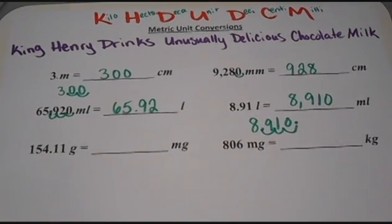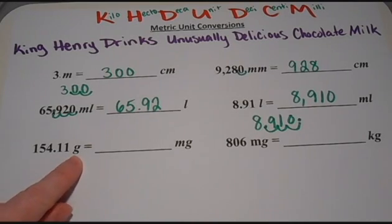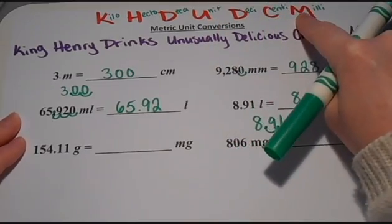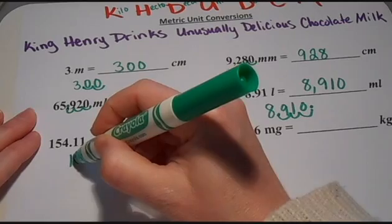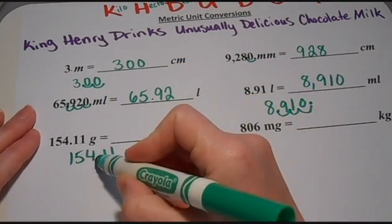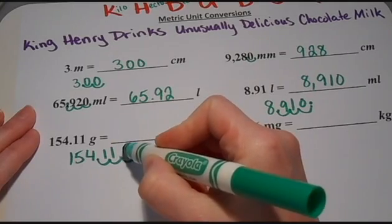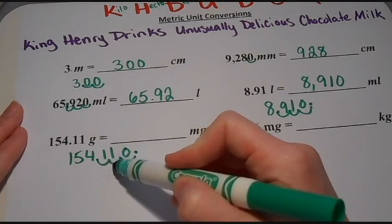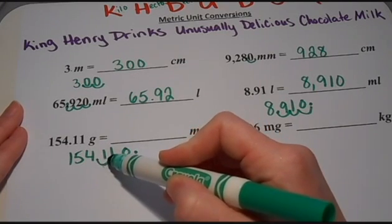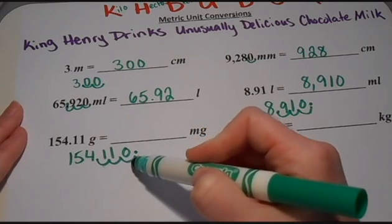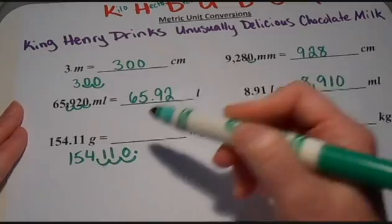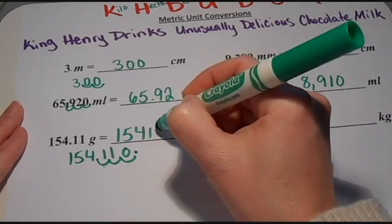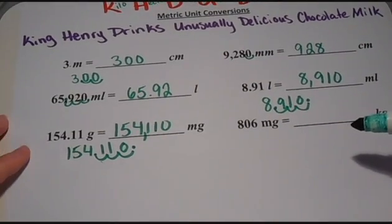Same thing with the grams. I'm moving from the base unit to milligrams, so I start at my unit and move over one, two, three spaces to the right. I move the decimal three spaces to the right and fill in any empty spaces with zeros. Make sure that when you're counting, you're counting in between the numbers — each gap is one jump. Since I didn't have anything in that third spot, I needed to fill it in with a zero. This gives me 154,110 milligrams.